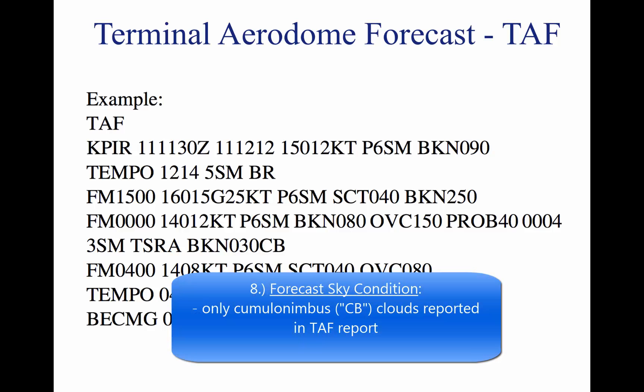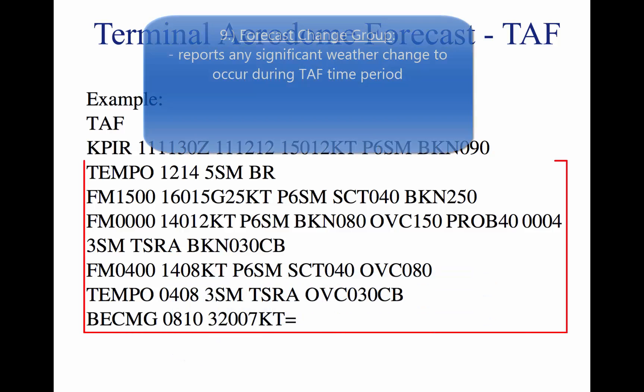Eight, forecast sky condition, given in the same manner as the METAR. Only cumulonimbus (CB) clouds are forecast in this portion of the TAF report, as opposed to CB and towering cumulus in the METAR.